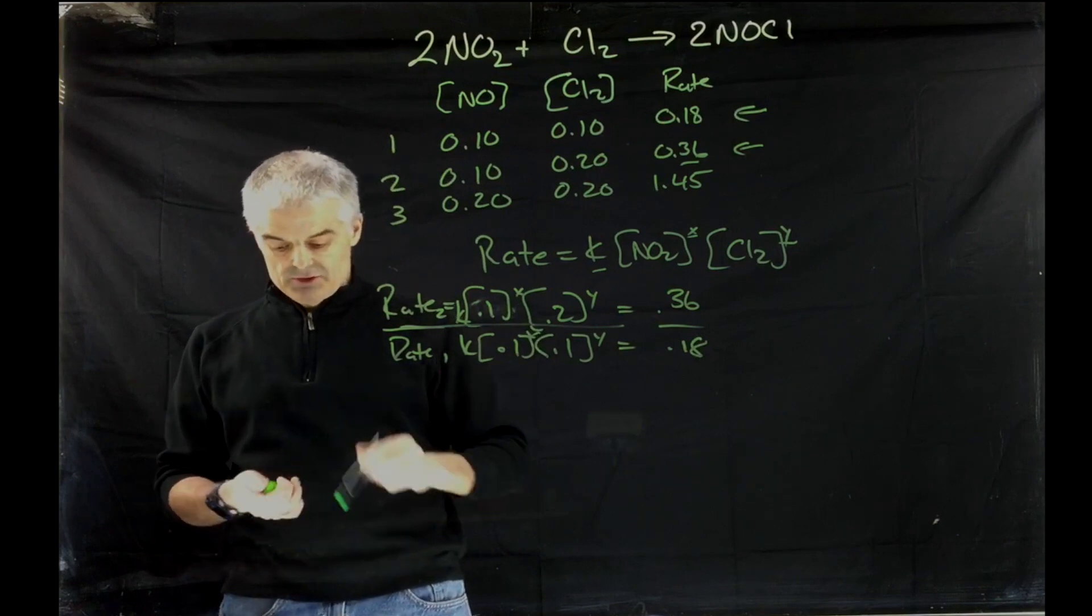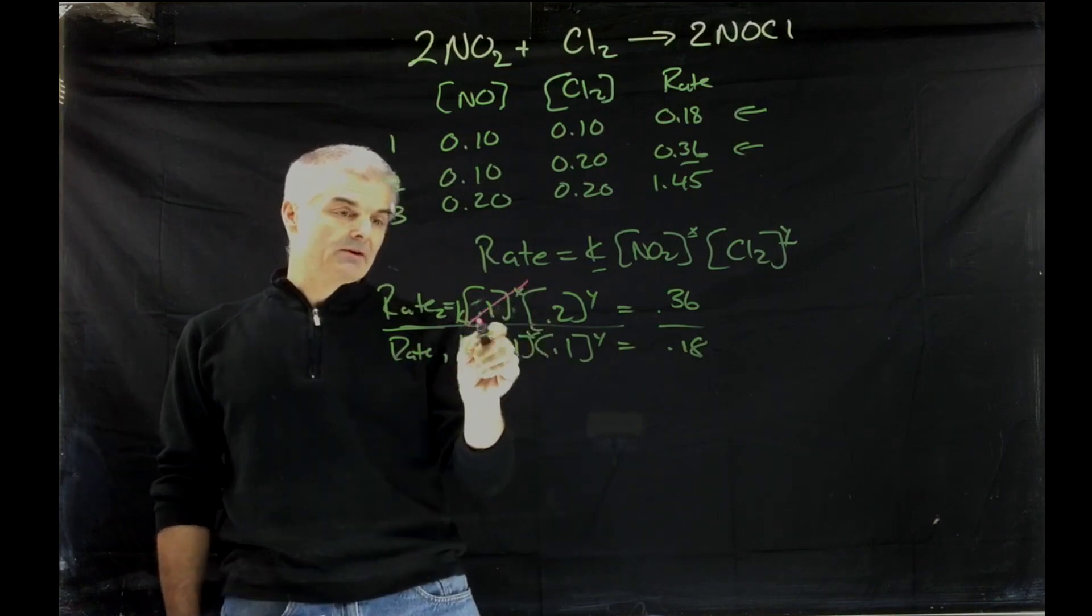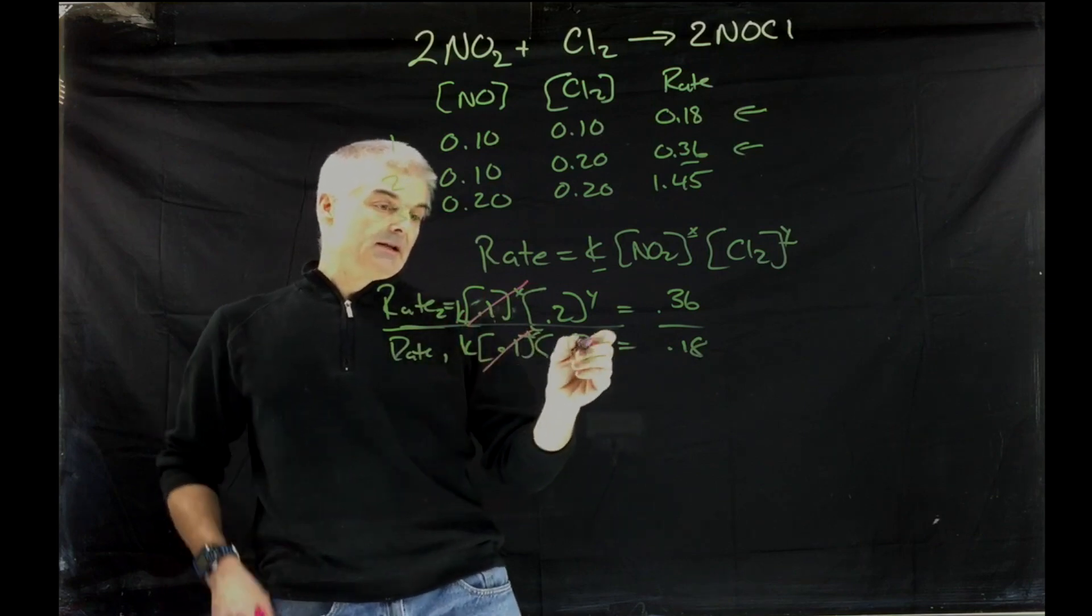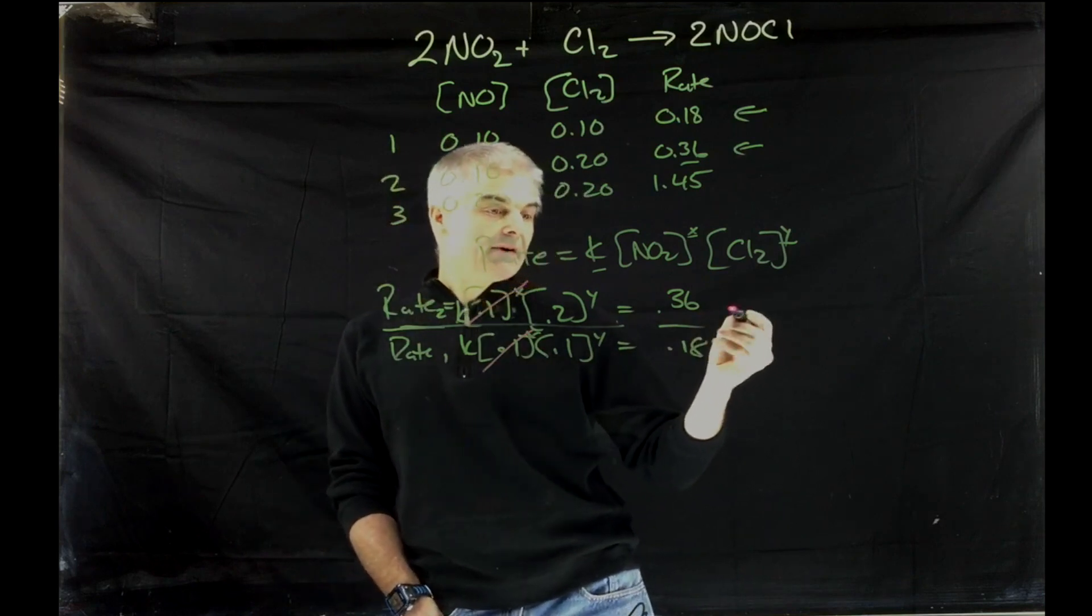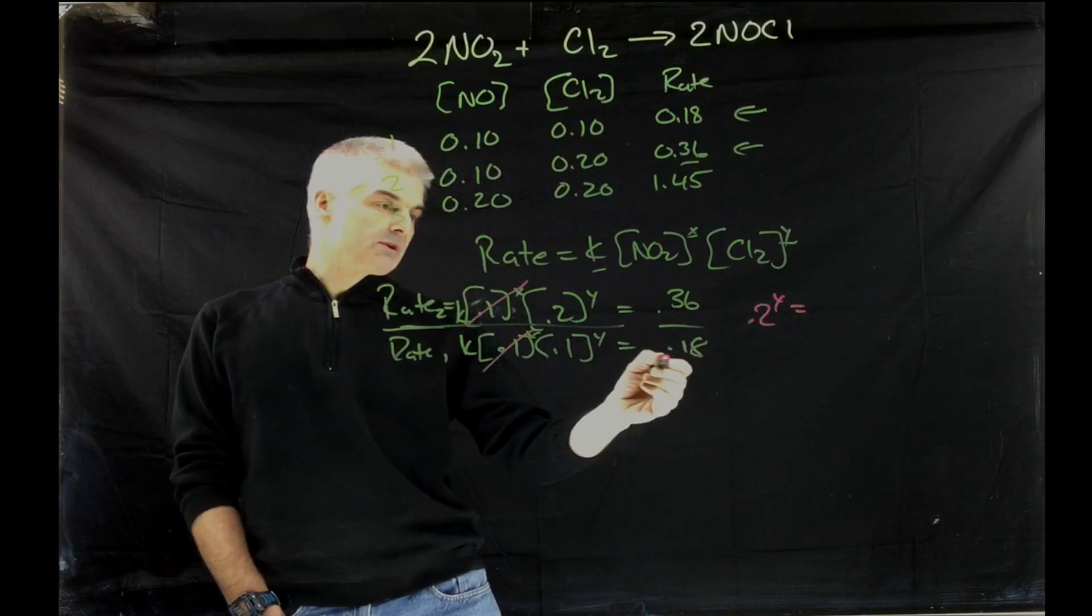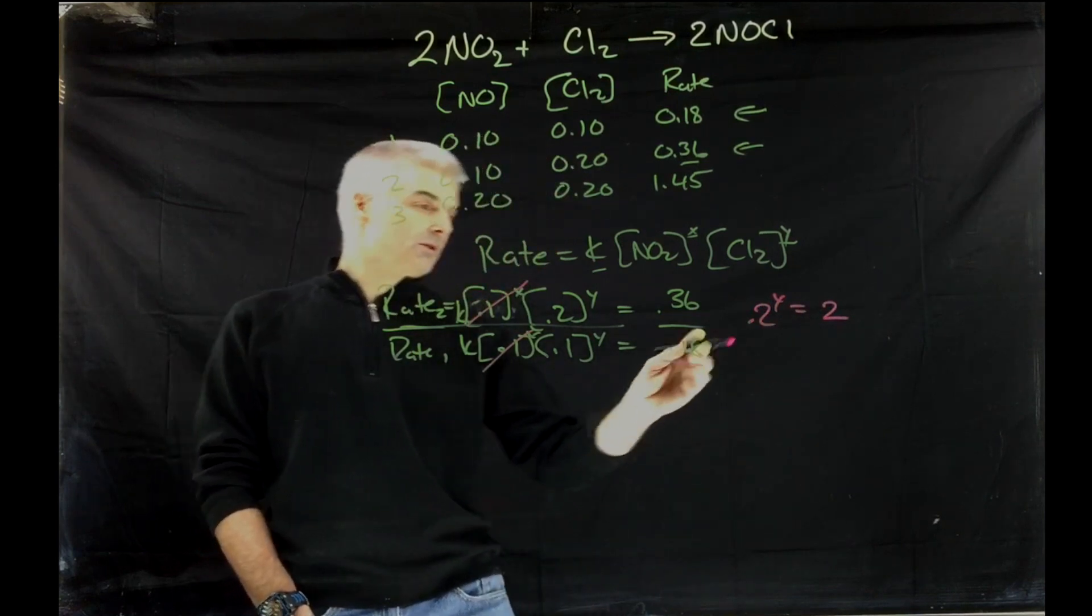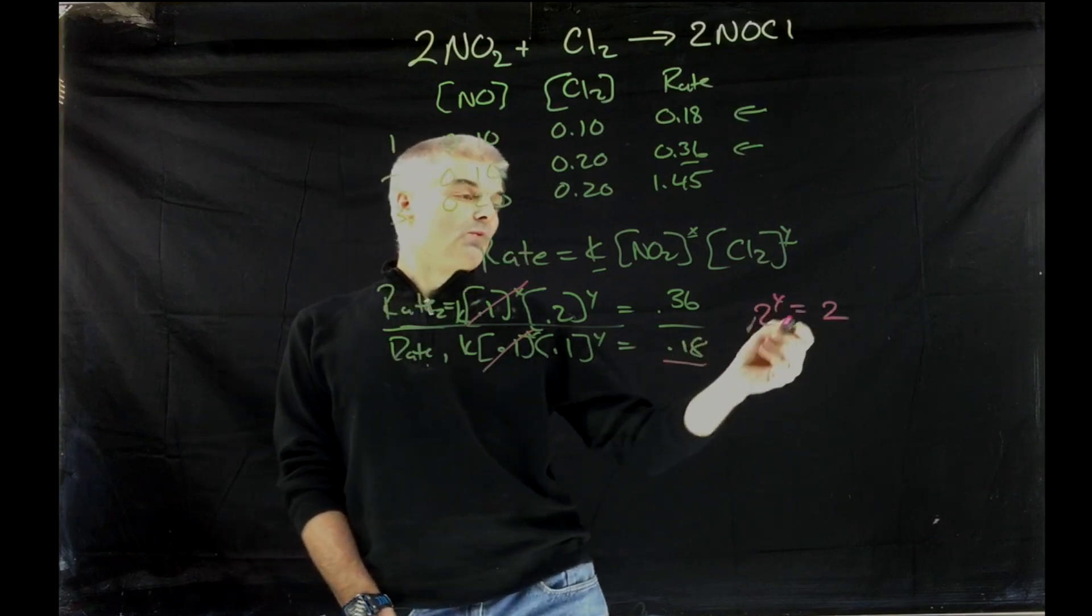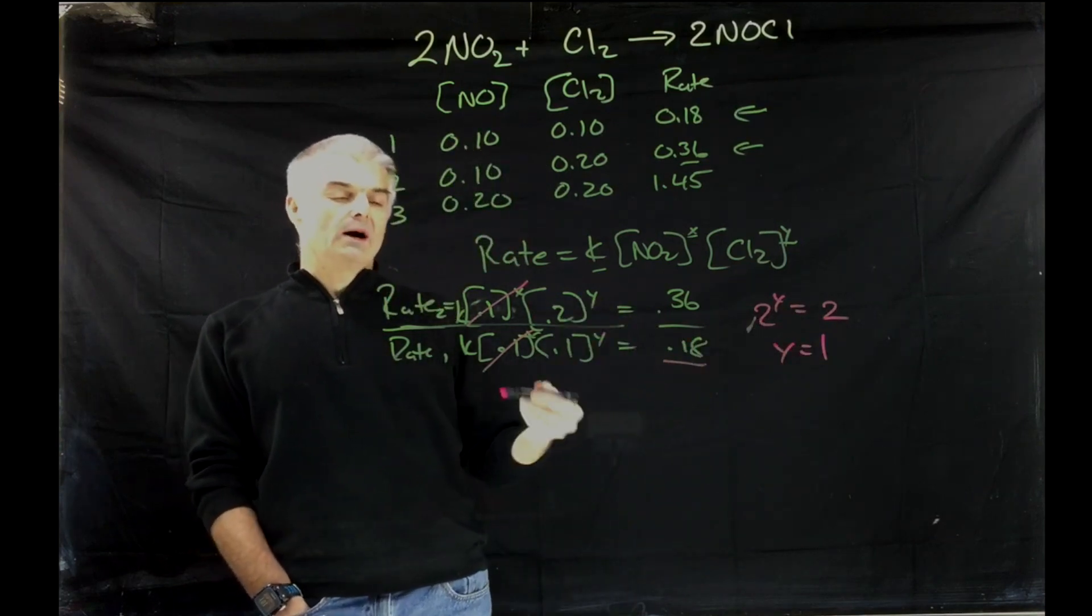Now, if you look at this more carefully, what you'll discover is that the .1 to the x, regardless of what they are, they're going to cancel. And so what you end up with is .2 divided by .1, or you can say .2 to the y equals .36 divided by .18, which is, of course, 2. So you take 2 to the y equals 2, then y equals 1. So now we've determined what y is.